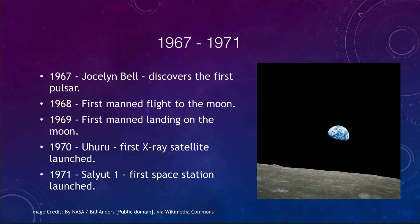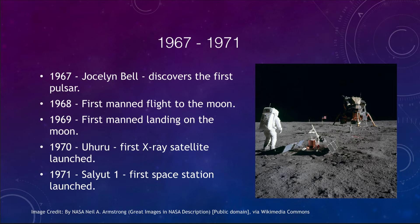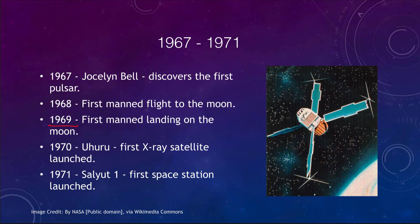Just a year or so later, Apollo 11 achieved the first manned landing on the moon in 1969 — only eight years after the first person was in space. Also, the Uhuru satellite was launched in 1970, opening another window on the universe. This was the first time we could study X-rays from space, which are unable to penetrate the Earth's atmosphere and therefore cannot be observed from the ground.